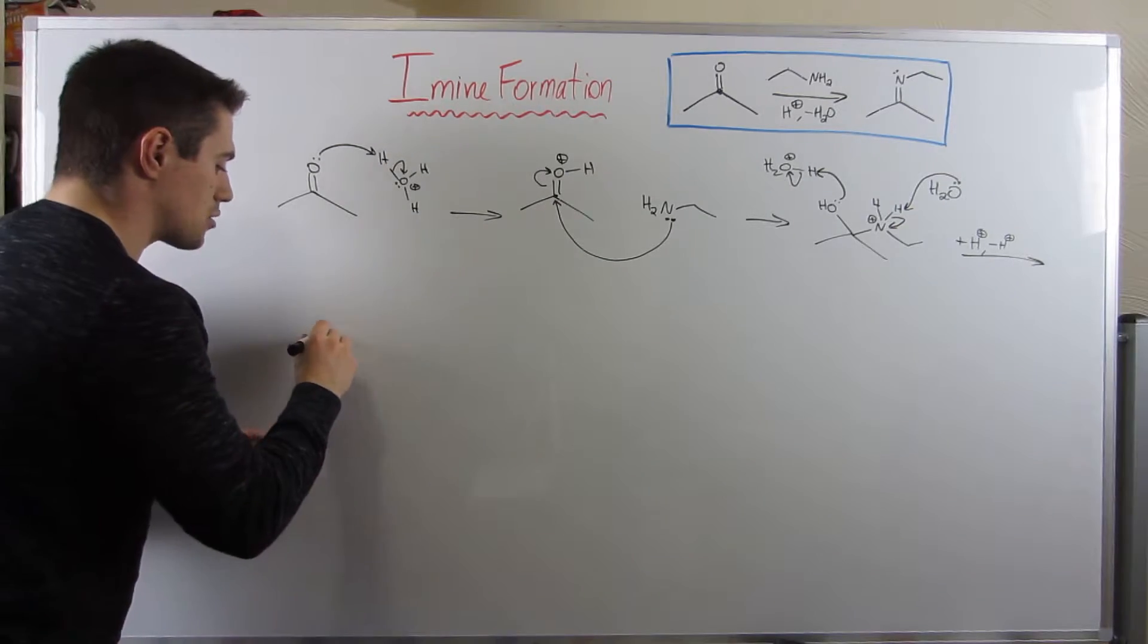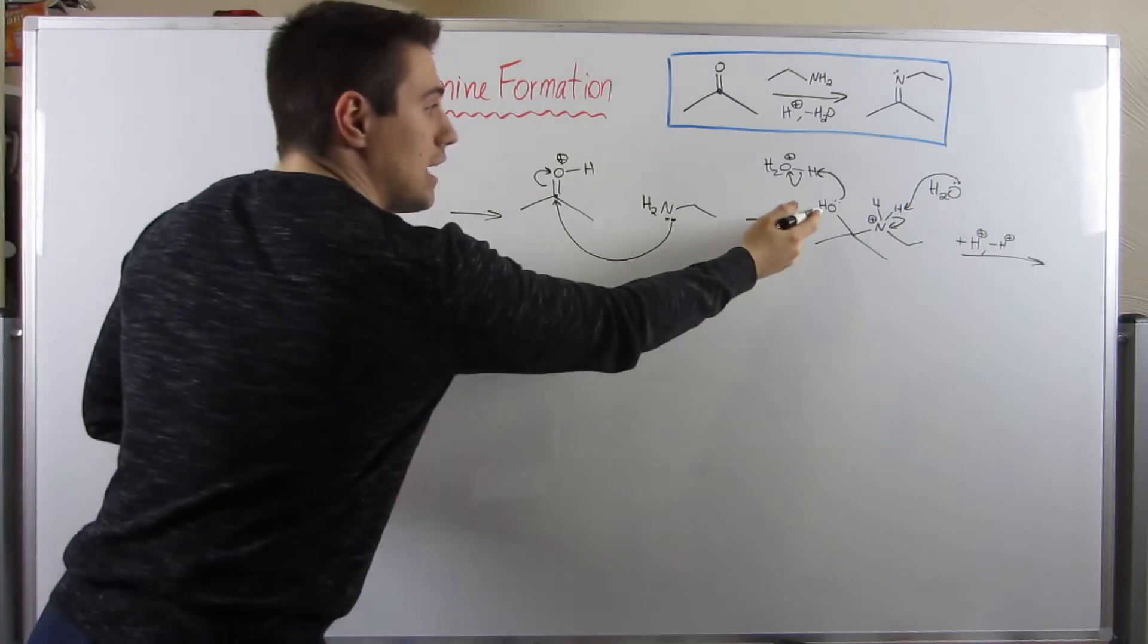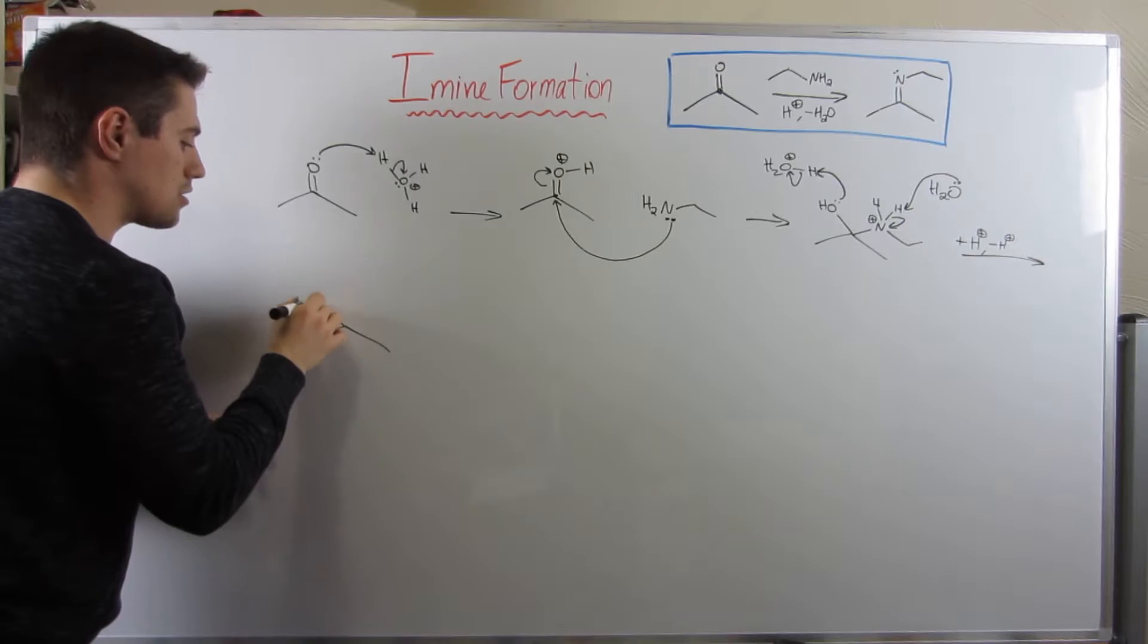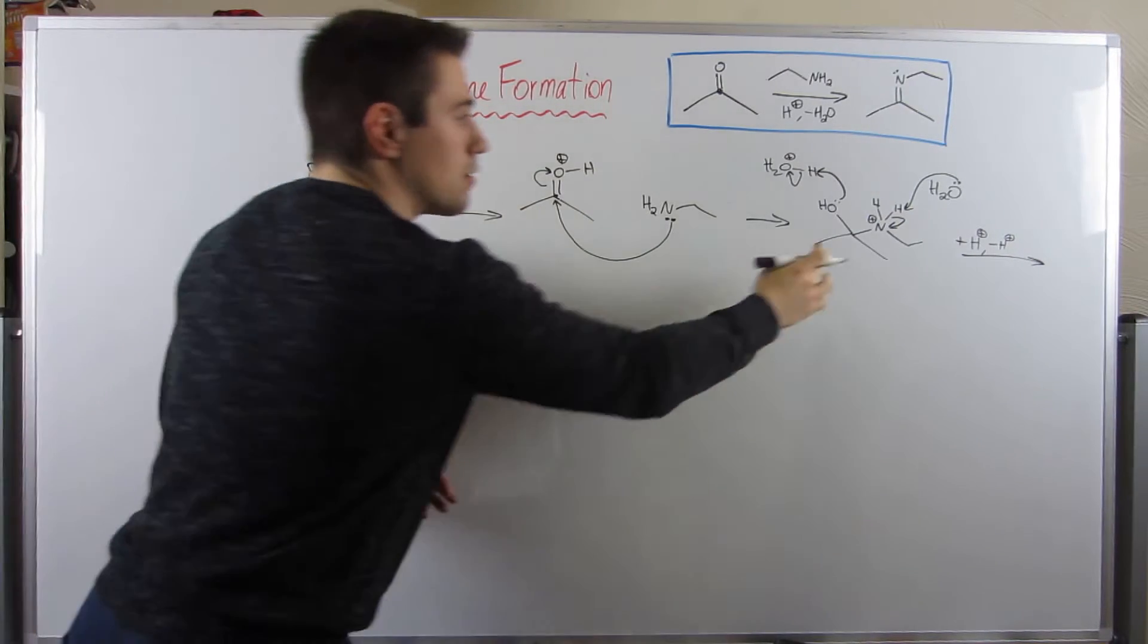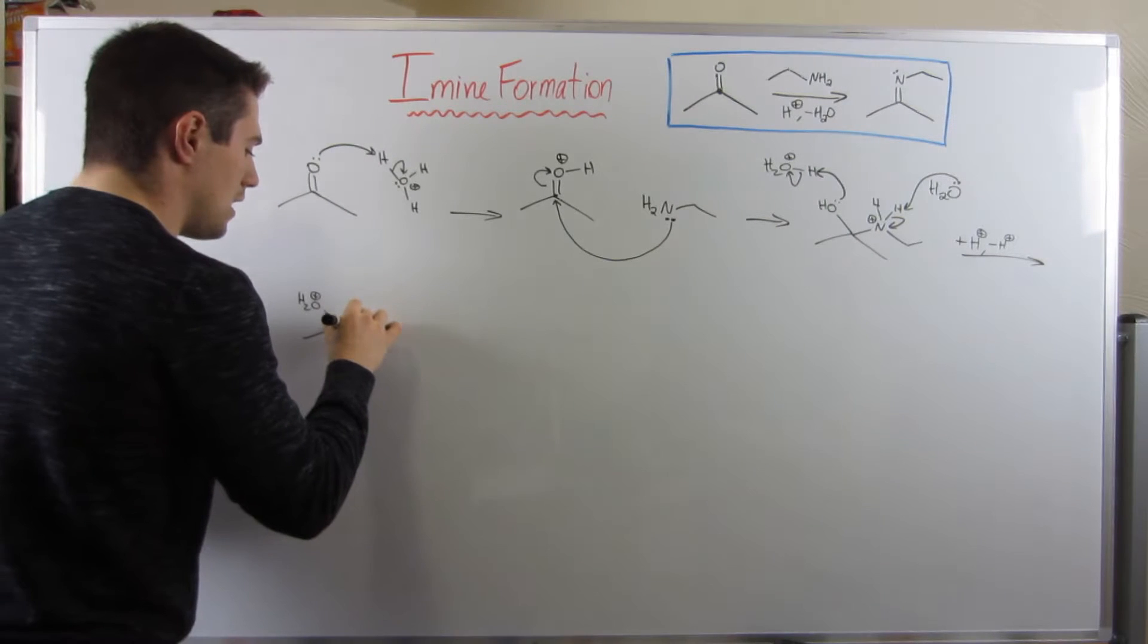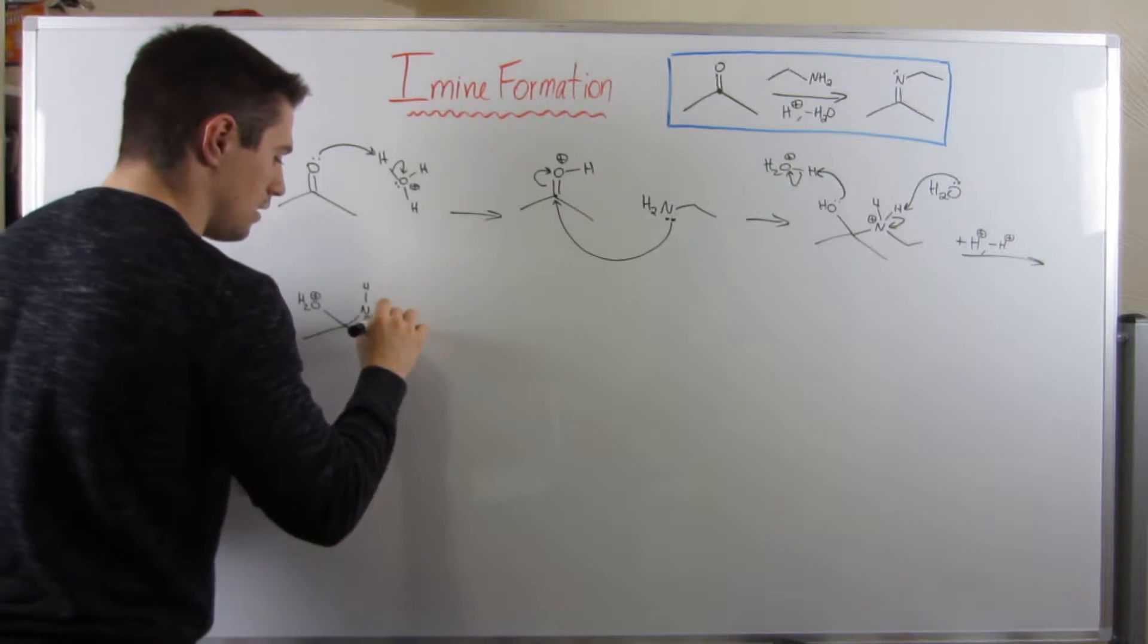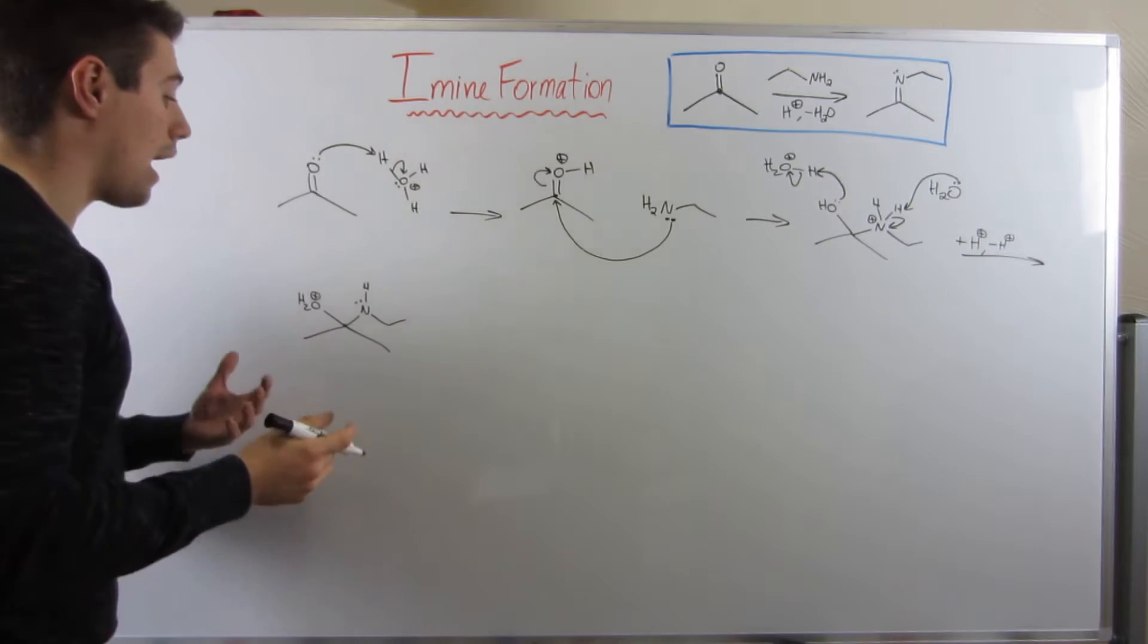So let's see what that electron flow looks like. We now have H2O up there, oxygen has a positive formal charge, and right now we have this deprotonated nitrogen piece, and he has a lone pair.